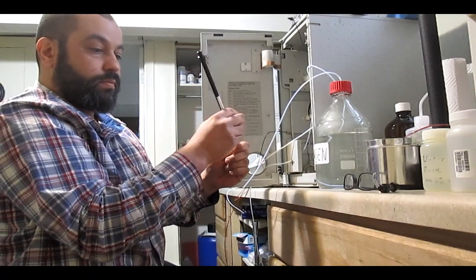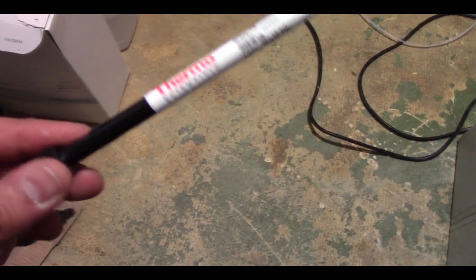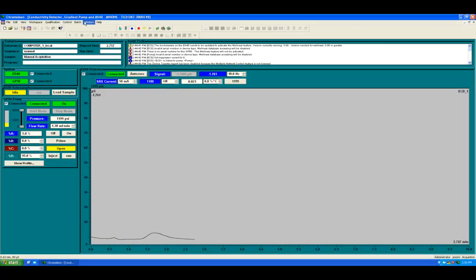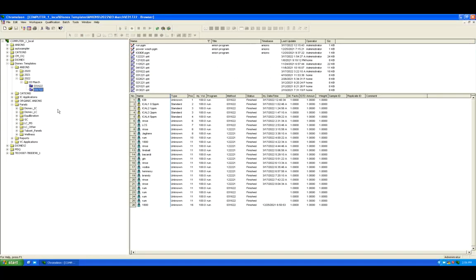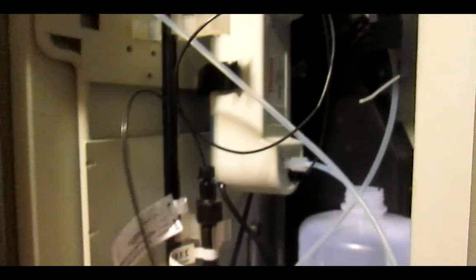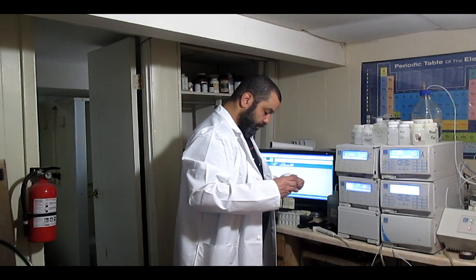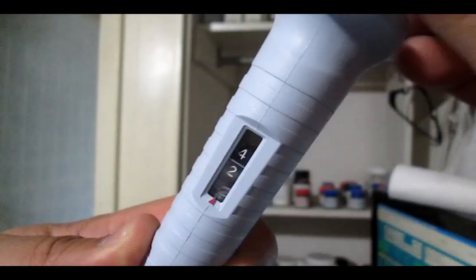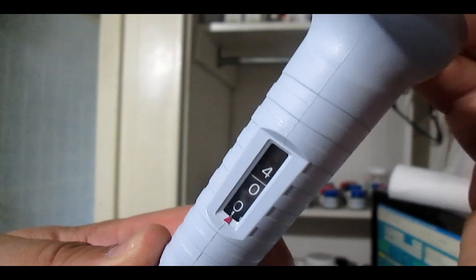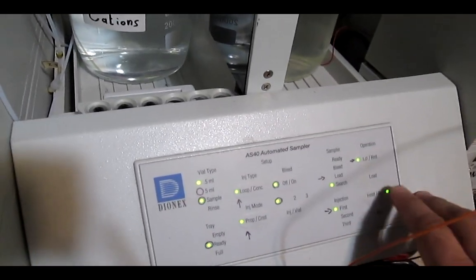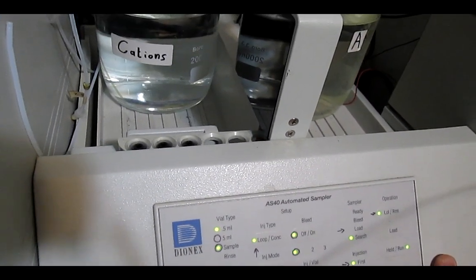I am using a 4mm Dionex AS4 for this analysis with a flow rate of 1.3 milliliters per minute and 50 milliamps setting on the suppressor. I use a carbonate eluent, 4 grams of sodium carbonate and 1.2 grams of sodium bicarbonate, 94 to 6 percent with DI water. And with 1 to 5 dilutions, here are the results.